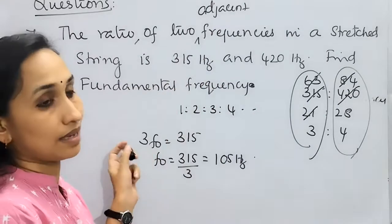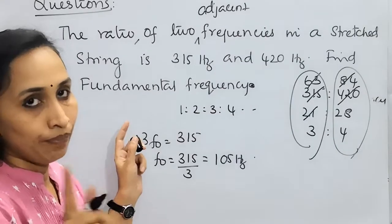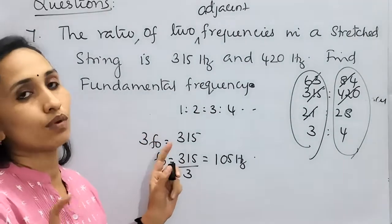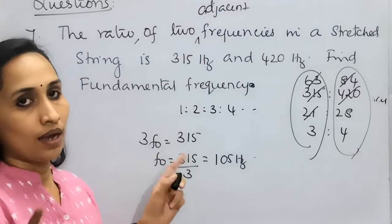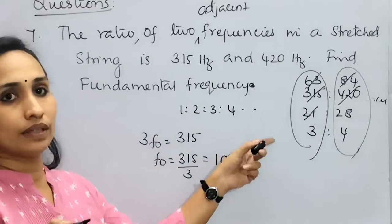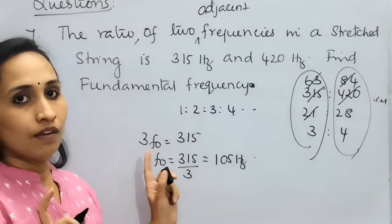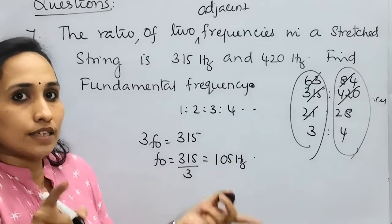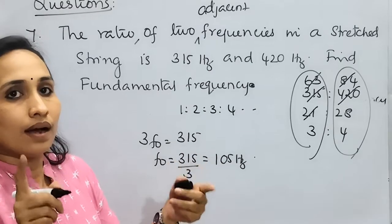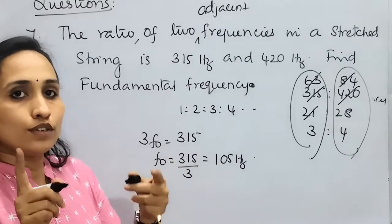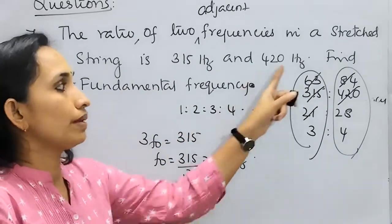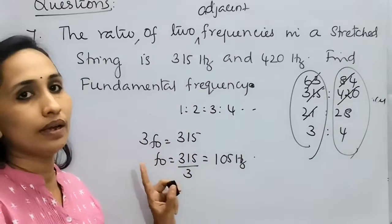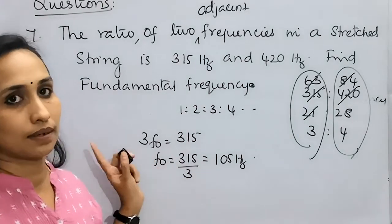Whenever adjacent frequencies are given in a stationary wave question, always check what their ratio is and compare with the fundamental frequency. That ratio should be an integer multiple of the fundamental frequency. The ratio 315:420 simplifies to 3:4, meaning the 3rd and 4th harmonics, so the fundamental frequency F0 = 315/3 = 105 Hz.